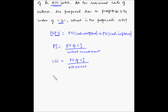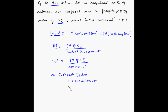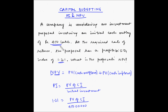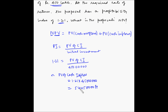450 lakhs means 45,000,000. So the present value of cash inflow equals 1.21 multiplied by 45,000,000, which comes out to 54,450,000 rupees. Now we know the present value of cash outflow, which is 450 lakhs, and we also know the present value of cash inflow, which is 54,450,000 rupees.